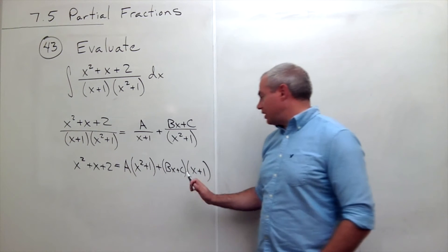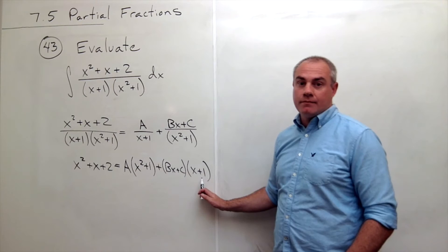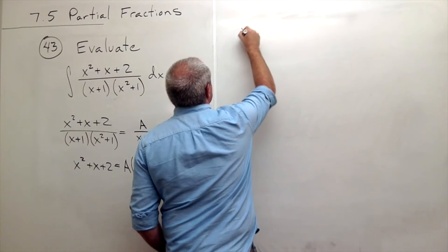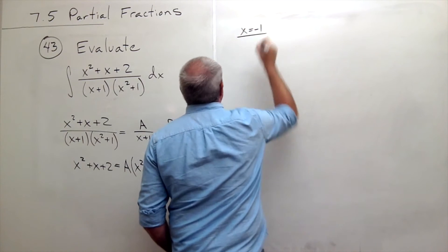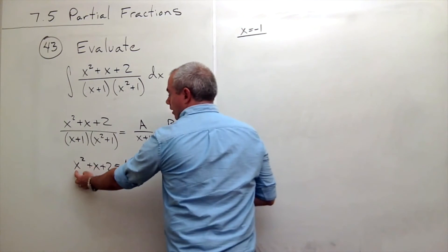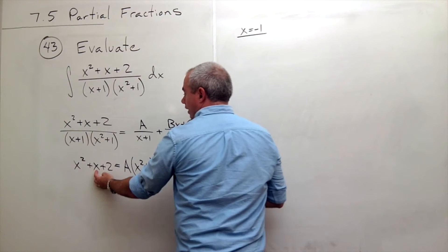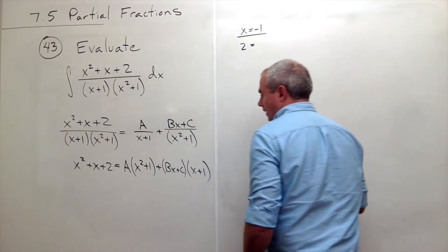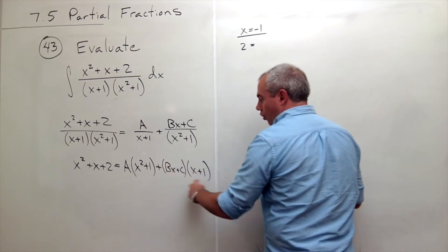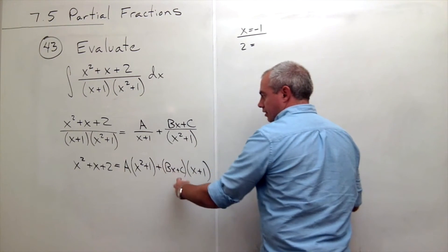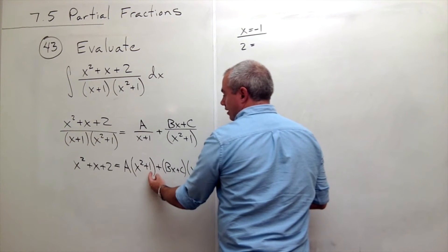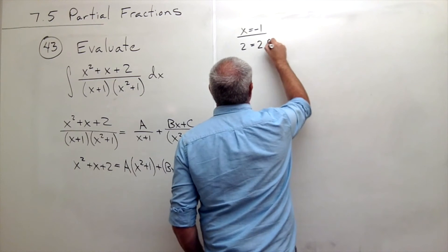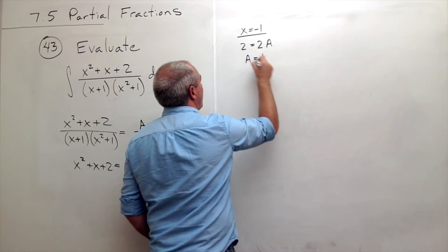One that's obvious is I could let x be negative 1. Now if x is negative 1, then what happens here? Well, I get negative 1 squared, which is 1, minus 1 is 0, plus 2 is 2. And negative 1 cancels this whole term out. And negative 1 squared plus 1, this is 1 plus 1, I get 2a. In other words, a equals 1.